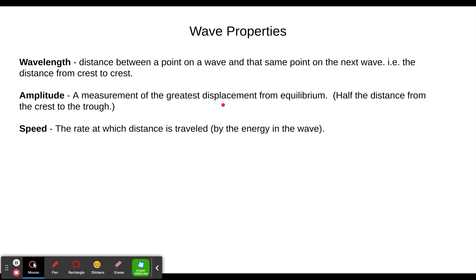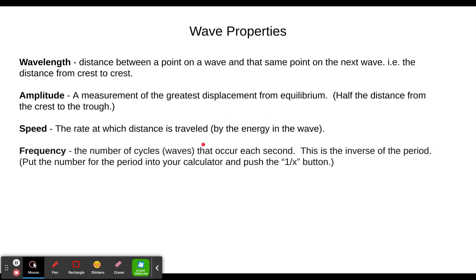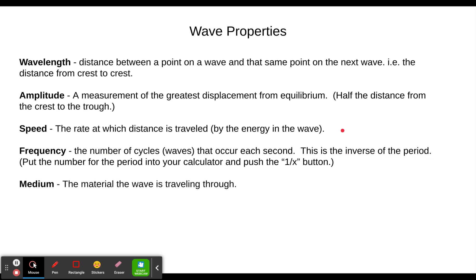Speed is the rate at which distance is traveled. In this case we're talking about the energy in the wave as the thing moving. Frequency is the number of cycles of a wave that occur each second. This is the inverse of the period, although that's not going to be pertinent in this particular concept builder.